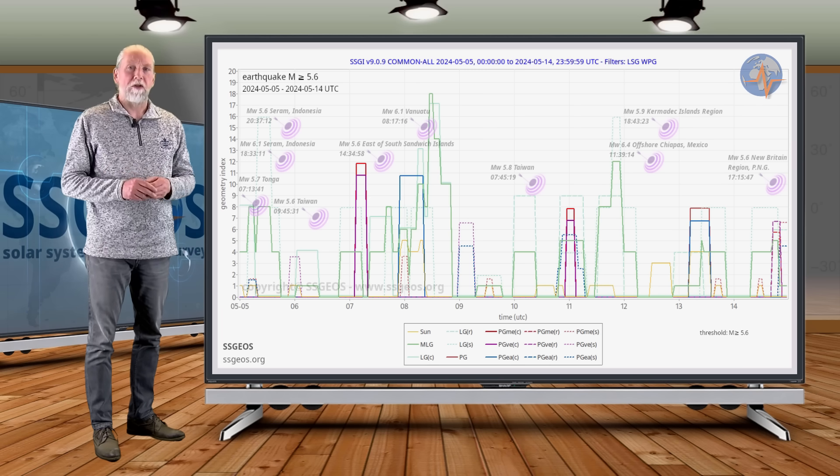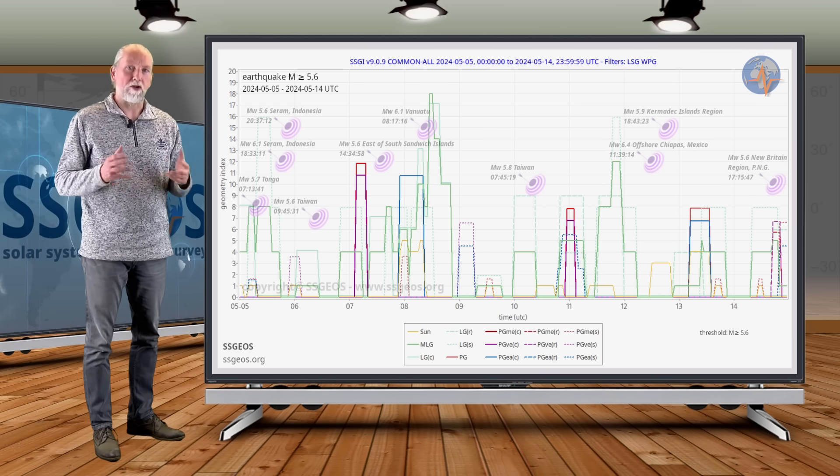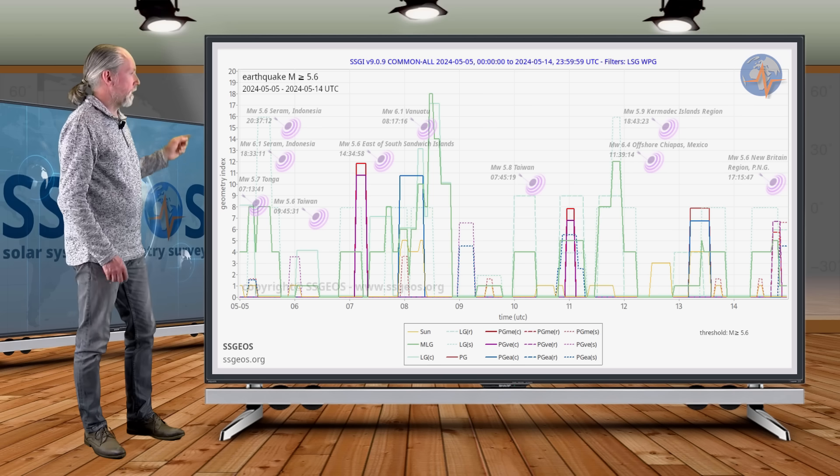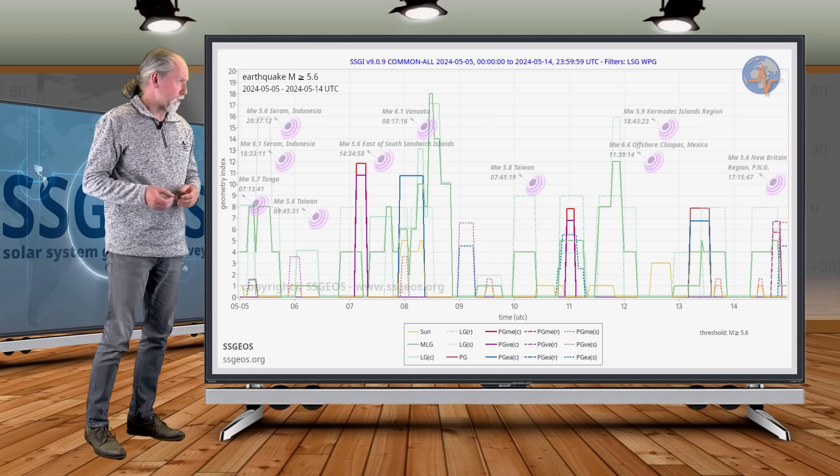You really need to look up those atmospheric fluctuations on the website and also in the social media. They are significant. And also a 5.9 at the Kermadec Islands region.